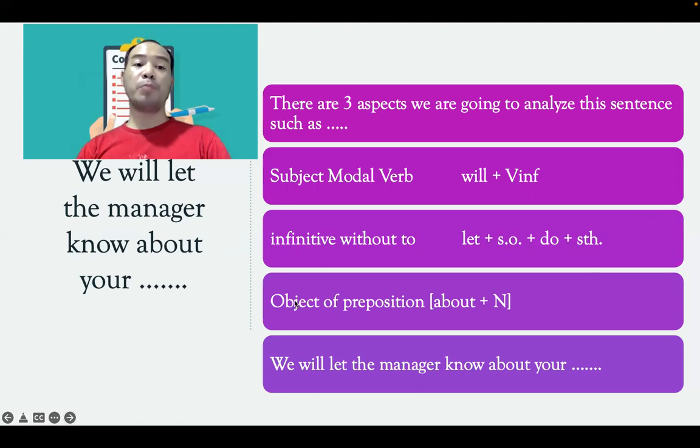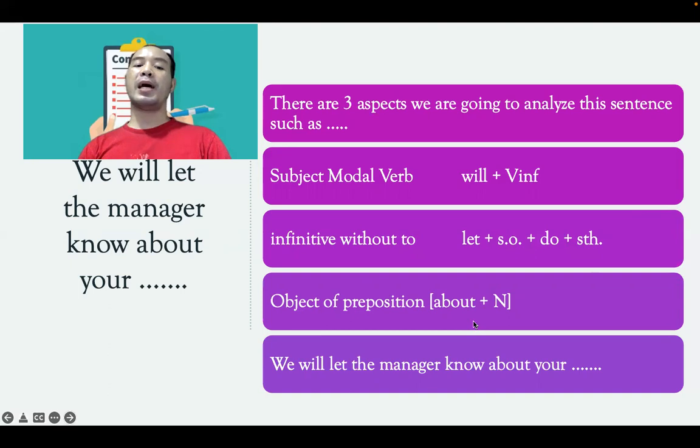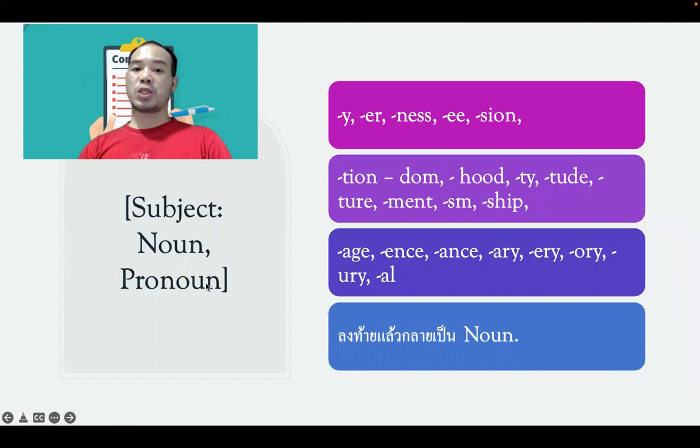It must be a noun because it is the object of the preposition 'about'. Let's go further, looking at whether a word is a subject or object.